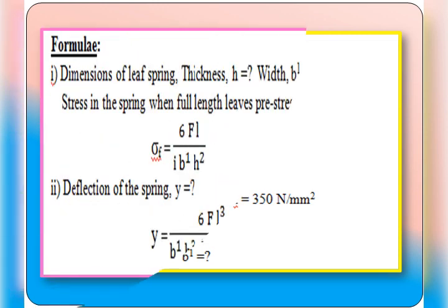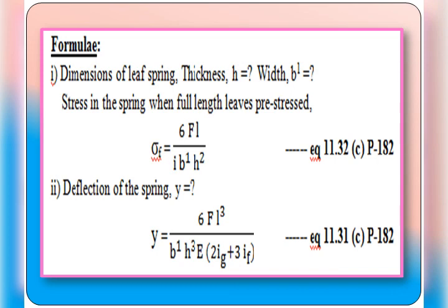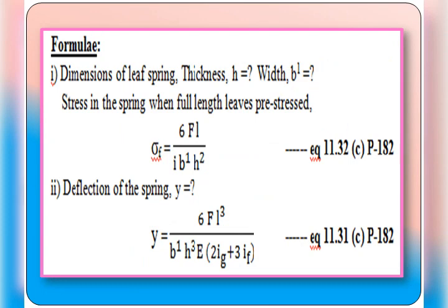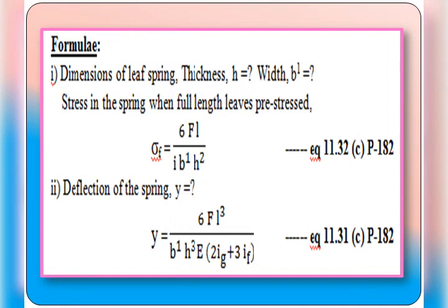To find the dimensions H and B dash, we need fundamental equations. The stress in the spring when full-length leaves are pre-stressed is given by equation 11.32c, page 182: sigma f = 6 × F × L divided by (i × B dash × H square). We also need the deflection equation 11.31c, page 182: y = 6 × F × L cube divided by (B dash × H cube × E × (2 × i_g + 3 × i_f)).